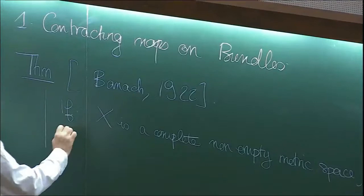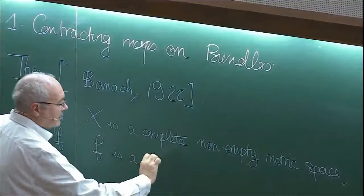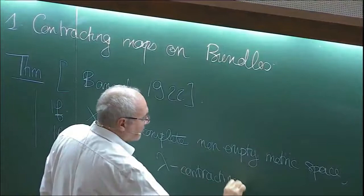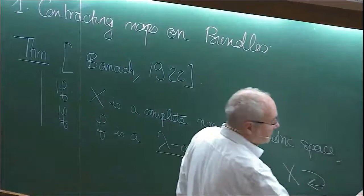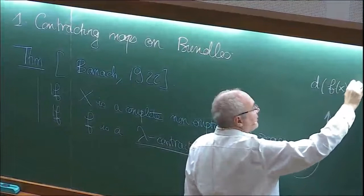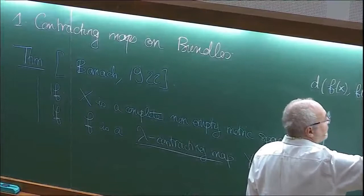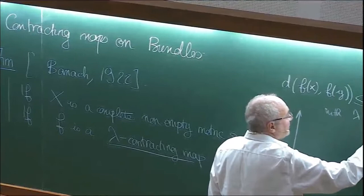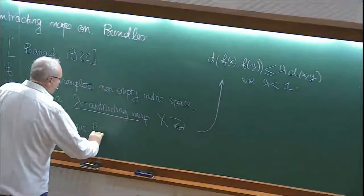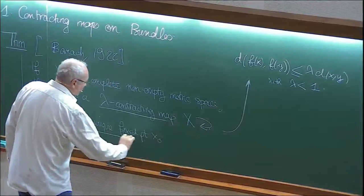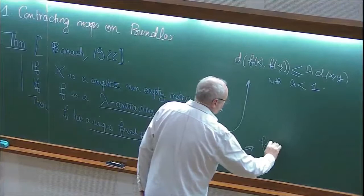and f is a lambda contracting map that goes from x to x — meaning the distance between f(x) and f(y) is less than lambda times the distance of x and y, with lambda strictly less than 1 — then f has a unique fixed point x-naught such that f(x-naught) equals x-naught.